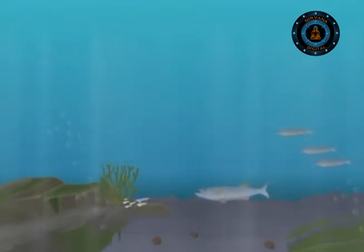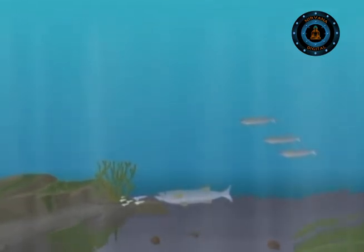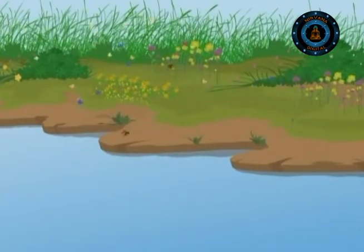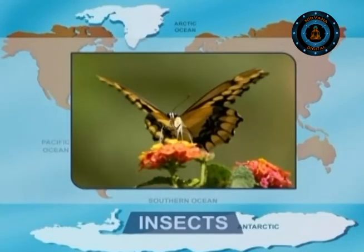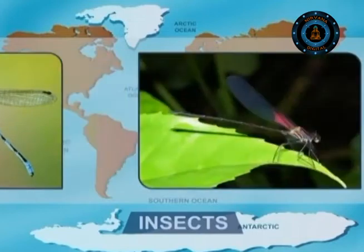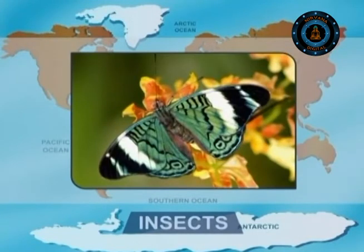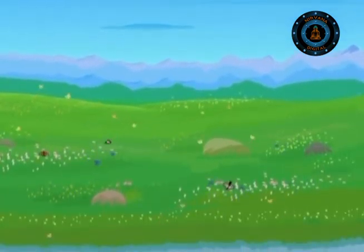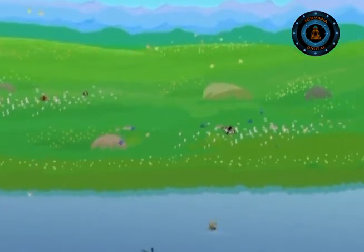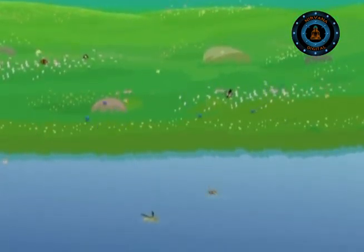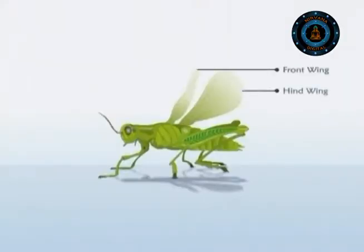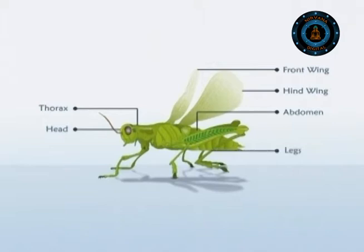These zooplanktons then become food for fish and other large animals. Insects play many different roles in the freshwater ecosystem. There are more varieties of insects in the world than all other animal species put together. Most of these insects live on land, but over millions of years of evolution, many have become specialists of freshwater, evolving many features that equip them for life in water.